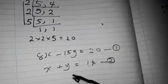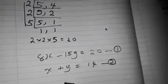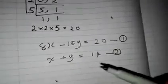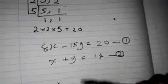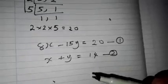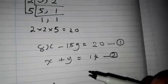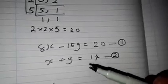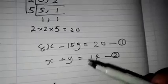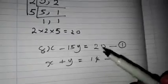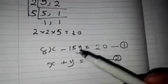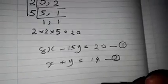So basically what I did: by finding the LCM of the denominators — here 5 and 4, LCM is 20 — and multiplying all terms by 20, we cancelled the fractions to get 8x minus 15y equals 20 as equation 1. So please check my other videos to understand how to solve this simultaneous equation.